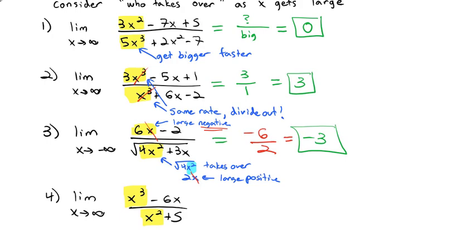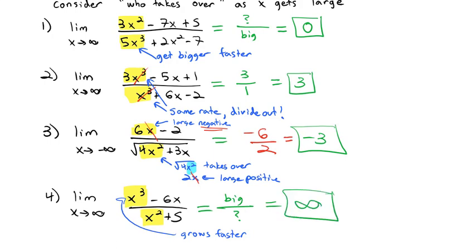But what you see is they're not growing at the same rate — this time the numerator grows faster, because cubed is going to get huge faster than squared. Similar to our first example, we're going to end up with a big number divided by something much smaller. So if I take a huge number and divide it by something small, I'm still going to be huge. This one is actually going to keep getting bigger up to infinity.